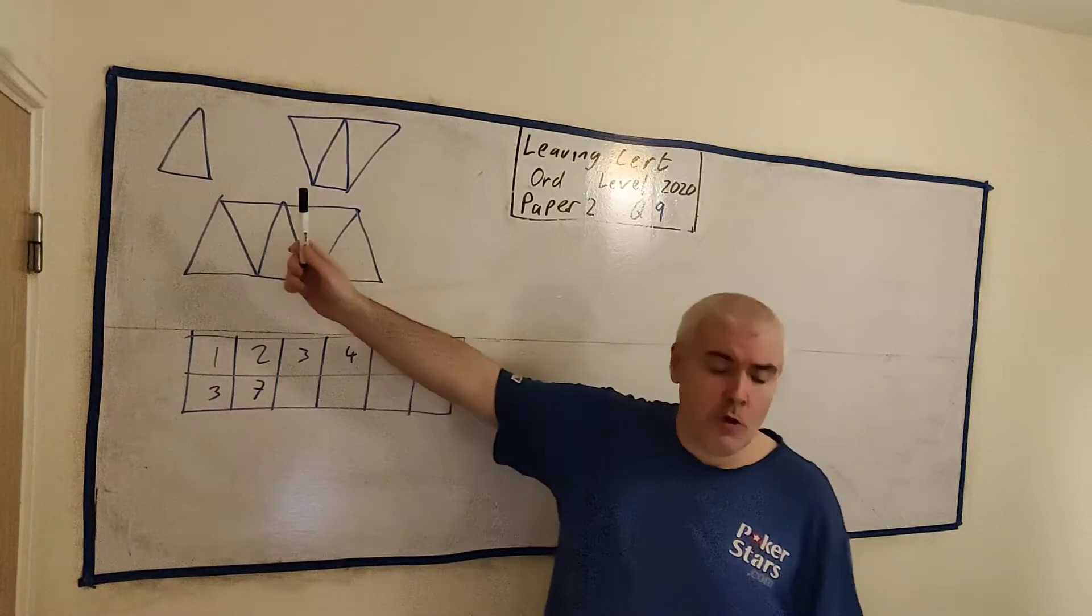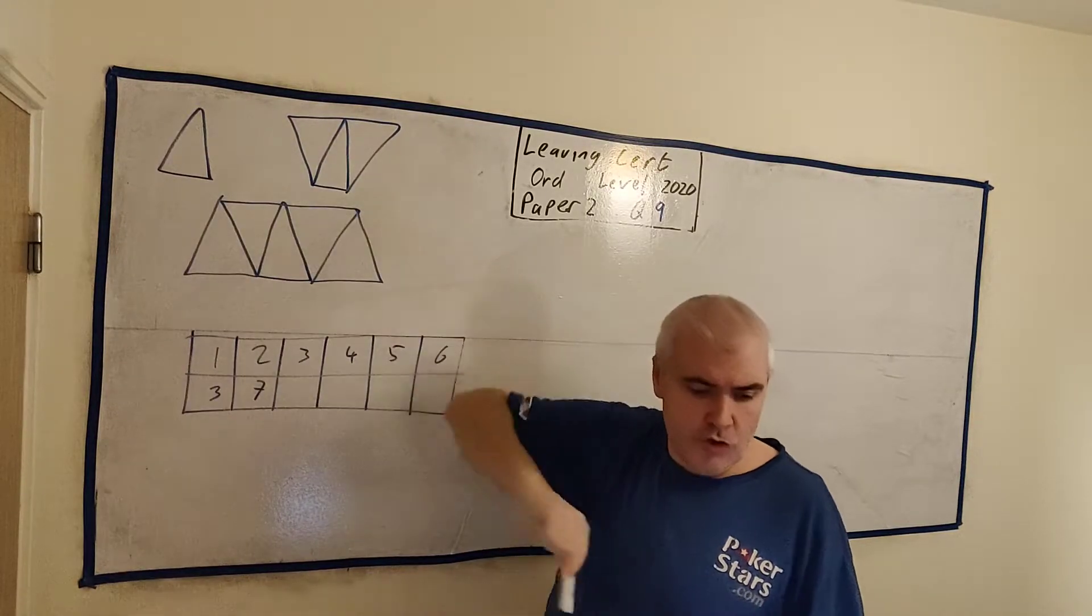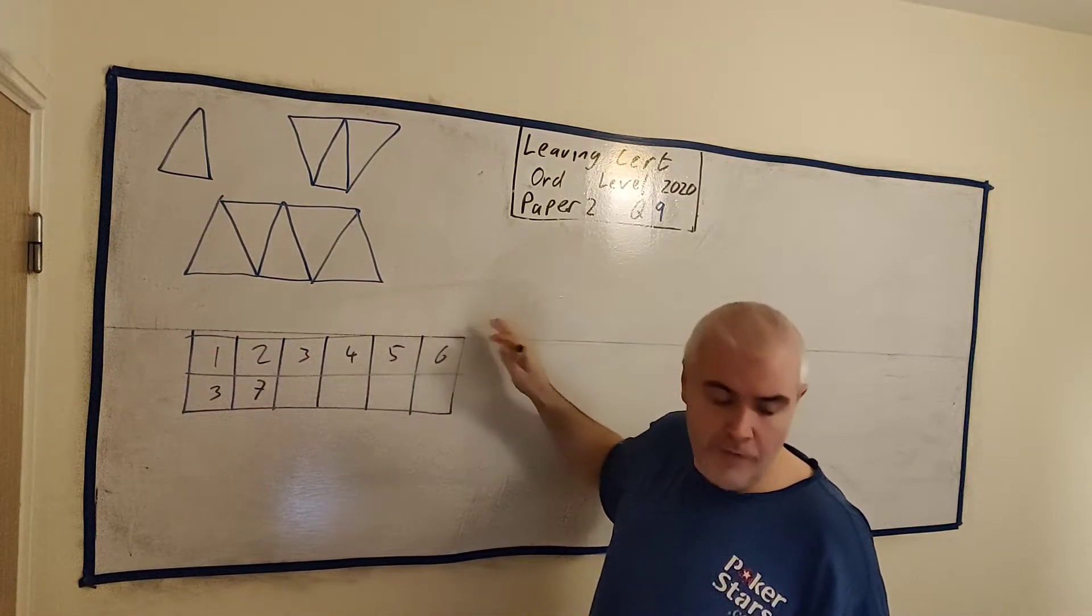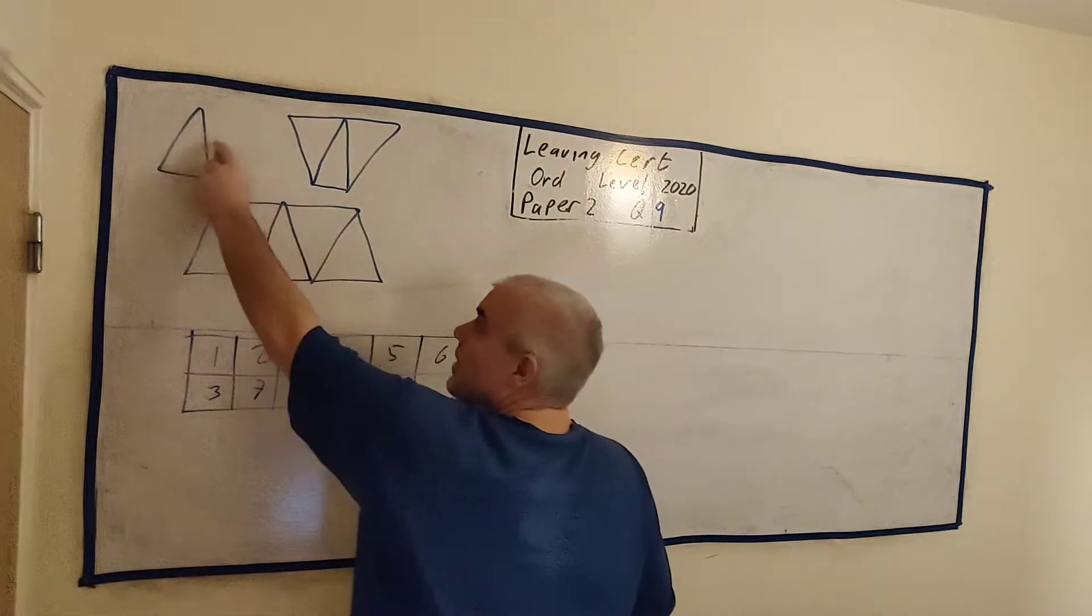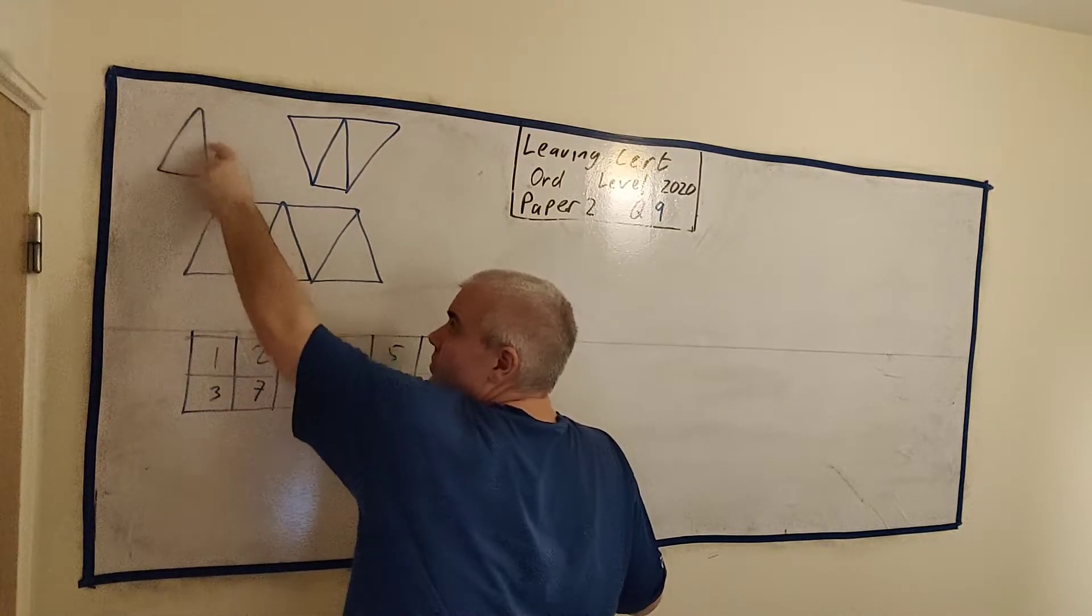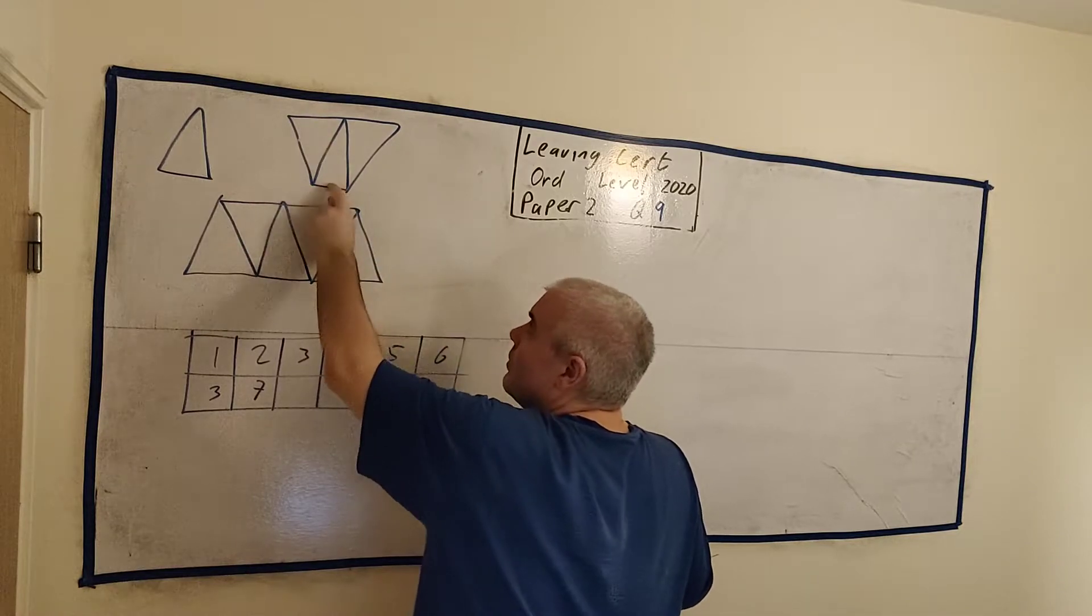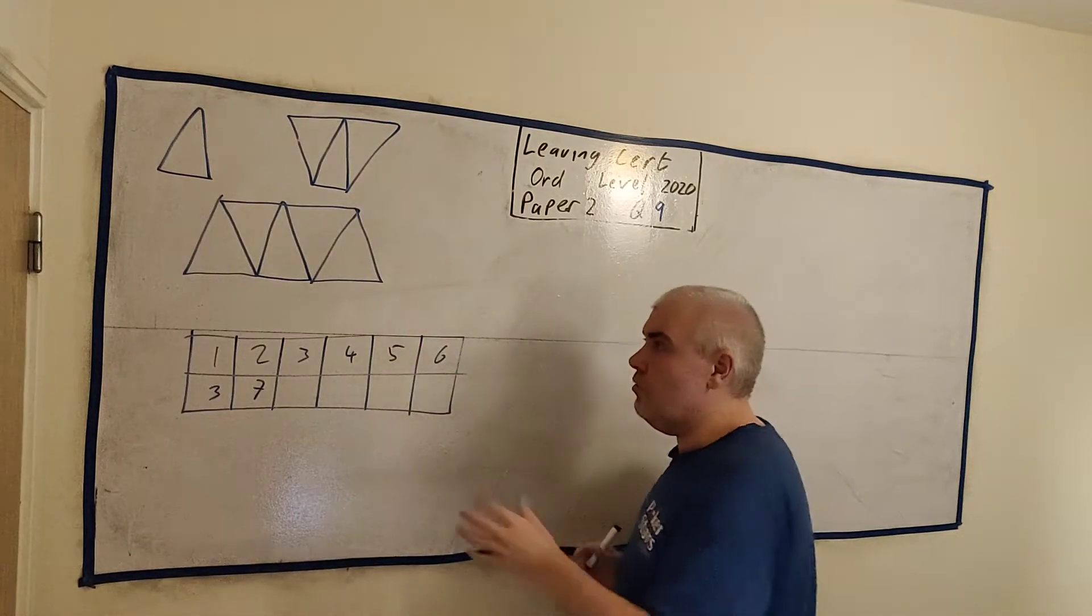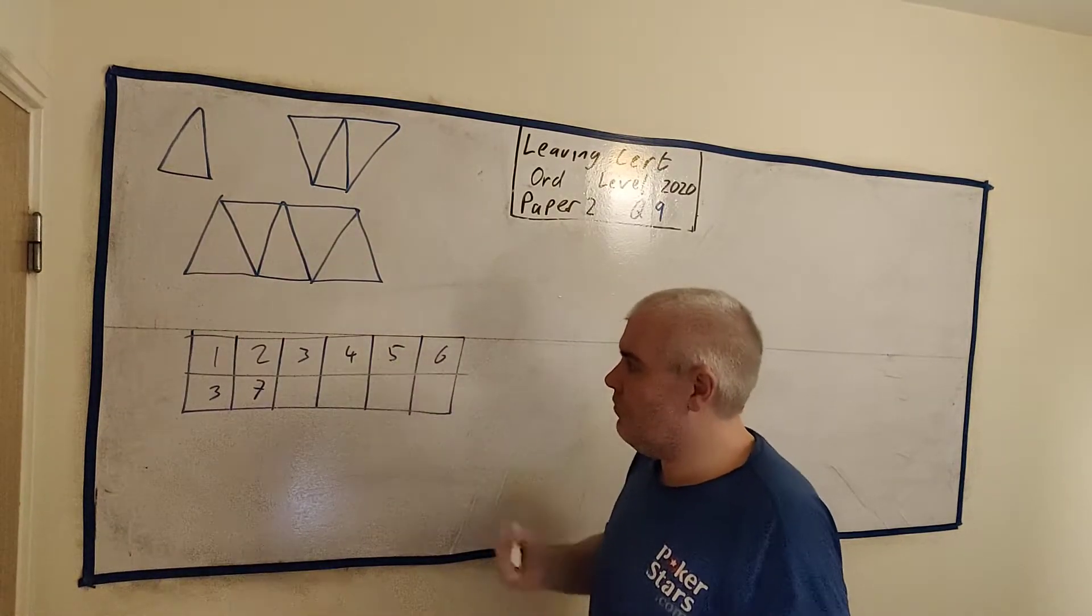This question gives us a few images here of triangles. It says pattern 1, pattern 2, pattern 3. It gives us a table. This is the number of the pattern: 1, 2, 3, 4, 5, 6. And this is the number of matchsticks. Now, the matchsticks are the edges. So the first one would have 3 matchsticks, 1, 2, 3. Second one would have 7: 1, 2, 3, 4, 5, 6, 7. And really all they want you to do is add up how much the next one does.